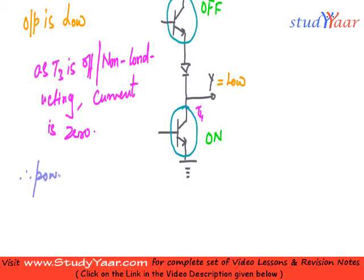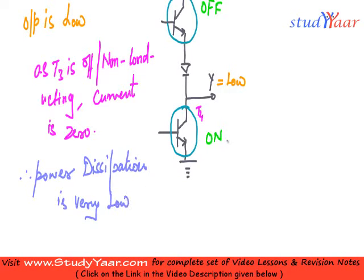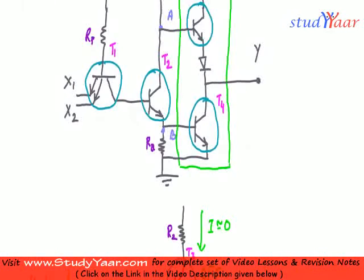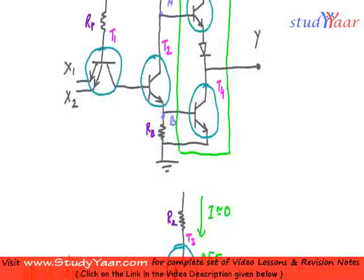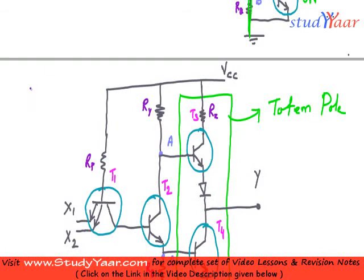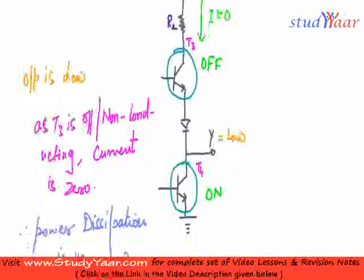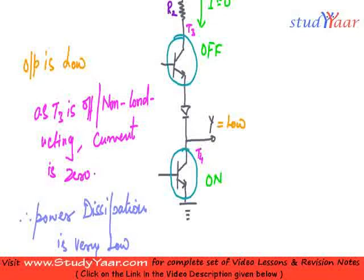Power dissipation is very low. So that can be thought of as an advantage of the totem pole configuration. We are talking about totem pole configuration, and you can think of this low power dissipation as an advantage.